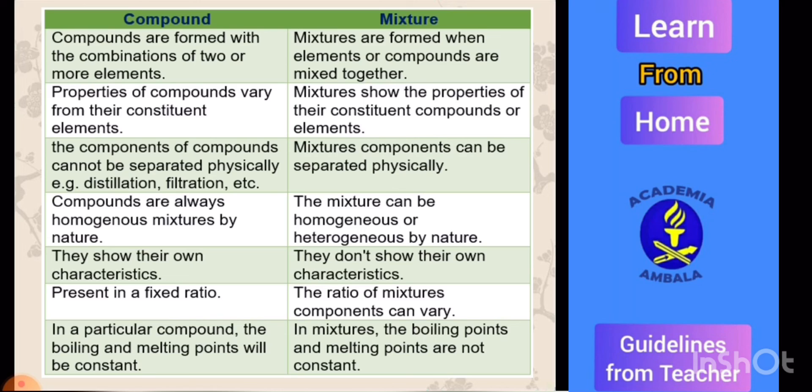Compounds show their own characteristics. Mixtures don't show their own characteristics. In compounds, elements are present in a fixed ratio by mass, but in mixtures the ratio of components can vary. In a particular compound, the boiling and melting points will be constant, but in case of mixtures the boiling points and melting points are not constant.